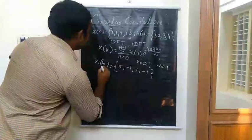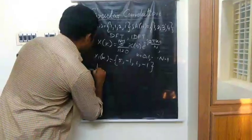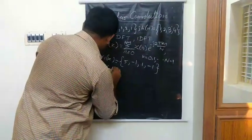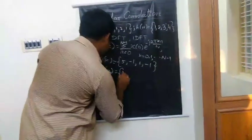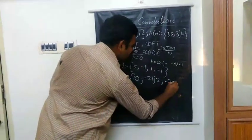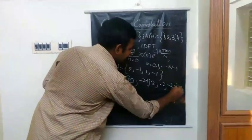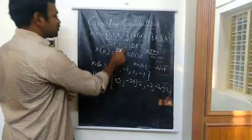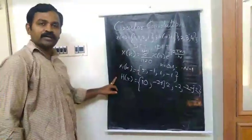Similarly, H of k. We are calculating for H of k. What will be H of k? 10, minus 2 plus j2, minus 2, minus 2 minus j2. So H of k and X of k we have calculated.